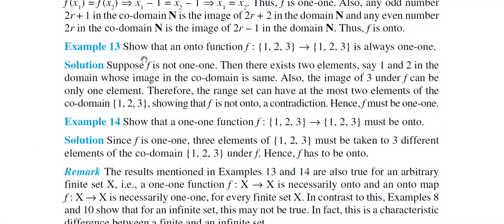Next, Example 13: Show that an onto function f: {1,2,3}→{1,2,3} is always one-one. Note that no definition of the function is given — only that it is onto. Both domain and co-domain are the same finite set {1,2,3}. The question asks us to show that any such onto function must always be one-one.